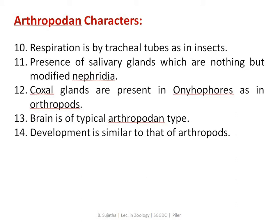Respiration is by tracheal tubes as in insects. Salivary glands are present in the mouth part near the antennae, which are nothing but modified nephridia. Coxal glands are present in Onychophores as in arthropods. The brain is of a typical arthropodan type. Development is similar to that of arthropods.